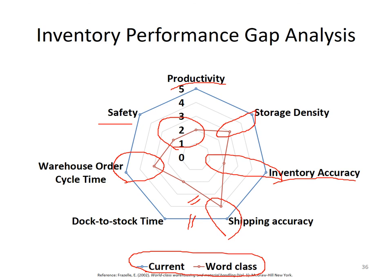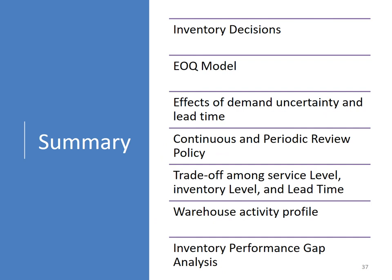From this graph, in shipping accuracy we are very close to world-class, meaning we are pretty good. On the other hand, in productivity and safety we are lacking significantly. In storage density our condition is moderate, same with warehouse order cycle time. Inventory accuracy is very low. Candidates for improvement are: safety, productivity, and inventory accuracy. This is how this kind of illustration helps us find out which areas to improve.